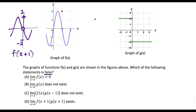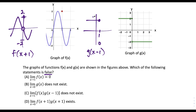Now we're going to look at g of x minus one, which would be the result of shifting this graph to the right one. So if we did that, all of the action would be happening at x equals one. So that would be the jump discontinuity in the graph at x equals one. We would be up here at y equals two, we would be going down to minus two like this, and the graph would be opening up like this. So all the action in this case is happening at x equals one.